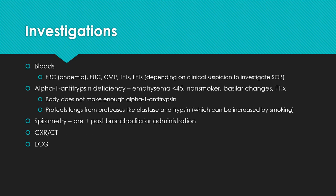In terms of investigations — remembering this is the first time she's come in, so we don't have a diagnosis of COPD yet — we're taking bloods to investigate this shortness of breath. We'll do a full blood count to check for anaemia, EUC to check renal function and whether she's acidotic, CMPs to check the thyroid, and LFTs depending on clinical suspicion — for example if you think liver failure and portal hypertension are leading to fluid overload.